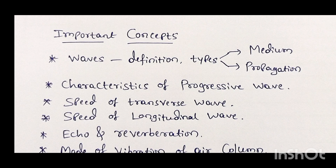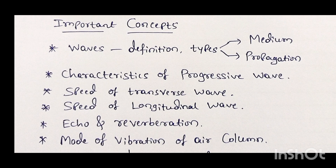Next concept is progressive wave — you may get three-mark or five-mark questions about characteristics of progressive wave. Next is speed of a transverse wave. On this concept you may get a five-mark question about how molecules or particles move in a transverse wave and on what factors the speed depends. Next, in the same way, speed of longitudinal wave — this is also a five-mark type question.